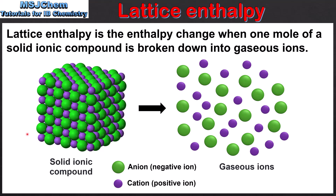Here we have a diagram that represents lattice enthalpy. On the left we have the lattice structure of a solid ionic compound, and on the right we have gaseous ions. In the solid ionic compound, the ions are attracted to each other by their opposite charges, which is known as an ionic bond. Energy is required to overcome the attractions between the ions, and the energy required is known as the lattice enthalpy. In other words, lattice enthalpy is the energy required to break apart a solid ionic compound into gaseous ions.